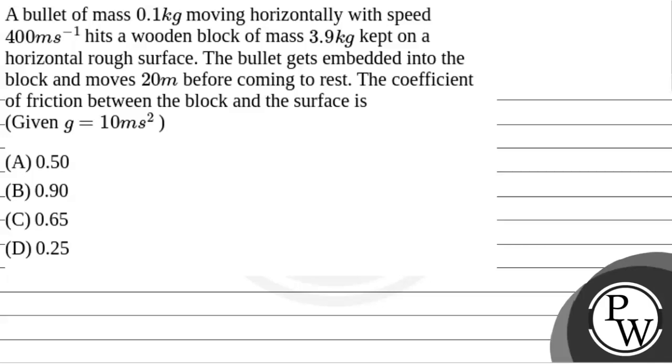Hello, let's read the question. The question says that a bullet of mass 0.1 kg moving horizontally with speed 400 meter per second hits a wooden block of mass 3.9 kg kept on a horizontal rough surface.